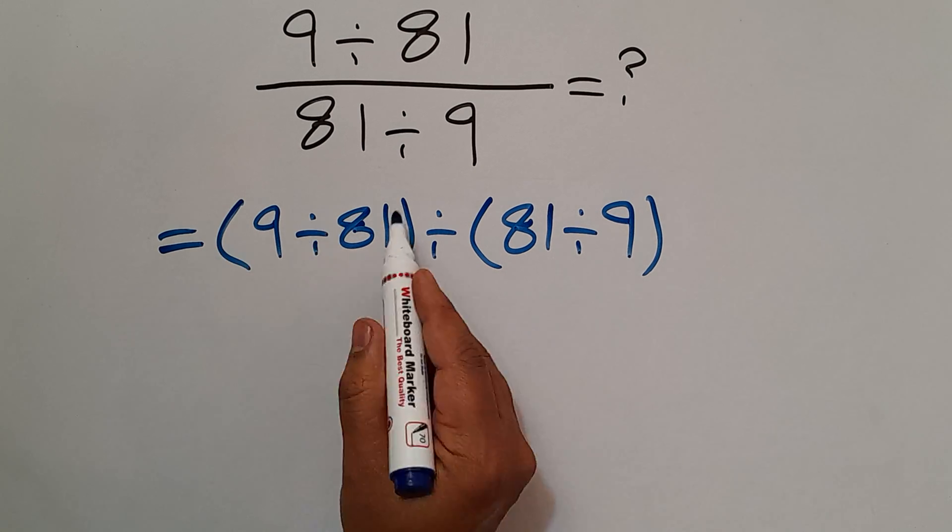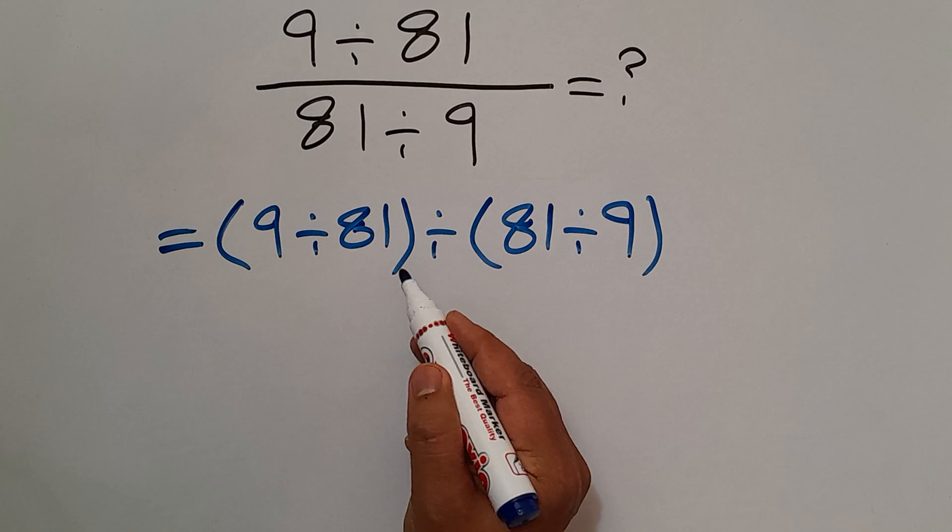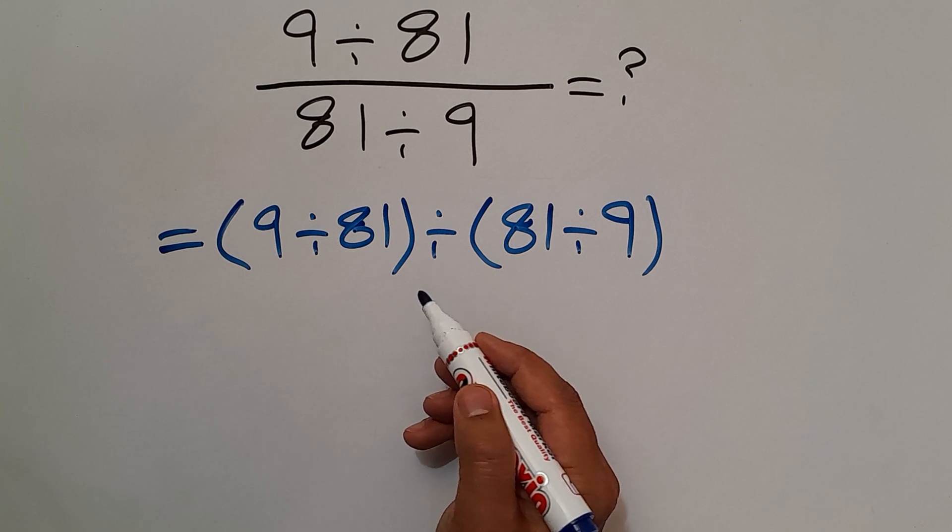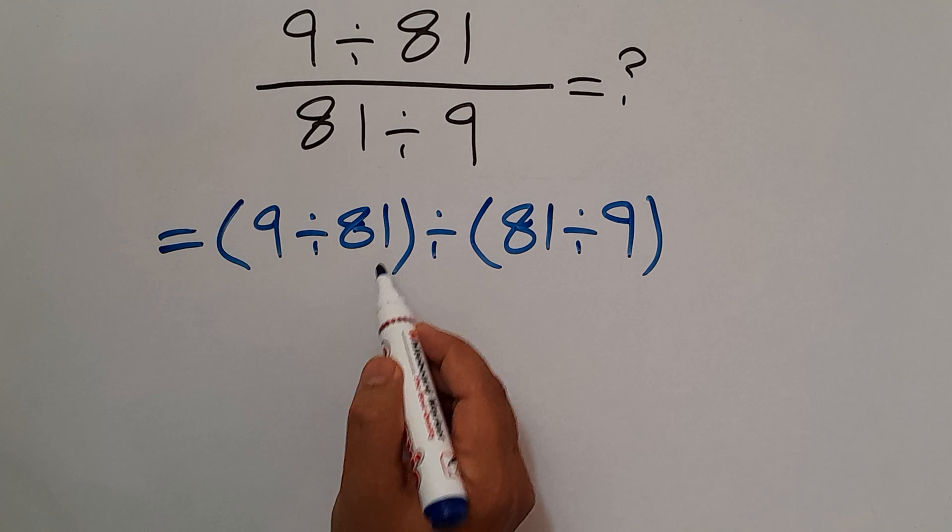And now we have two parentheses and one division. As we know, parentheses has higher priority than other operations, so first we do these parentheses.